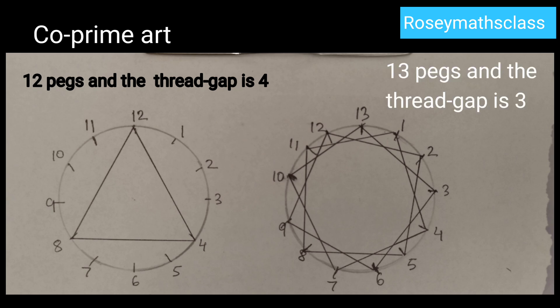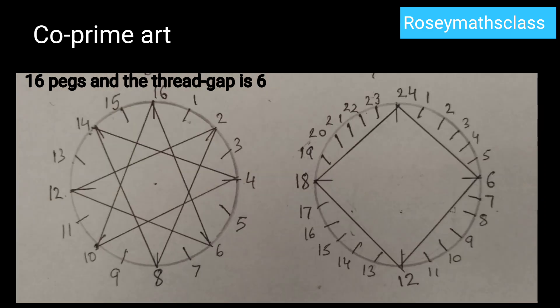The second diagram has 13 pegs and the thread gap is 3. The third diagram has 16 pegs and the thread gap is 6.